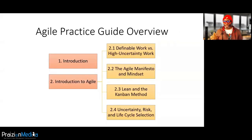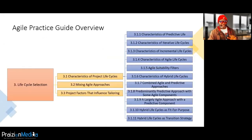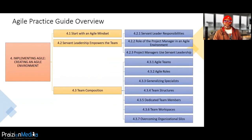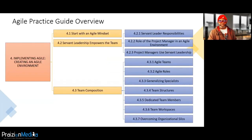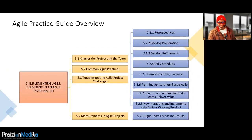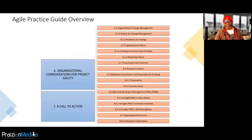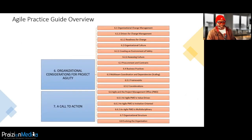This is the breakdown of the chapters. There's an introduction, an introduction to Agile, lifecycle selection which is pretty important, implementing Agile, and delivering in an Agile environment. Chapter six is about organizational considerations for project agility, and chapter seven is a call to action.